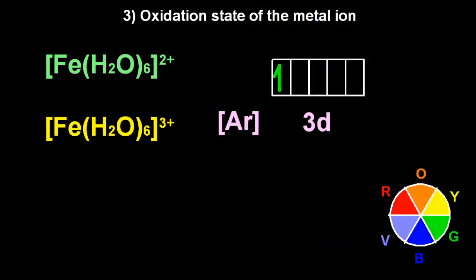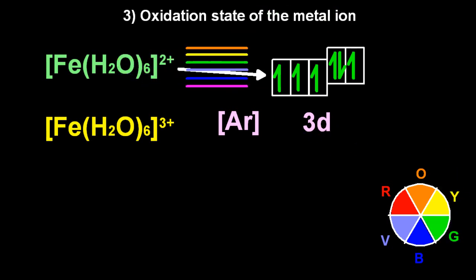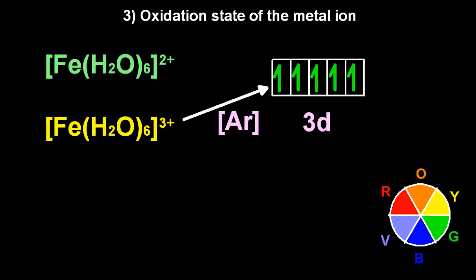And the third reason is the oxidation state of the metal ion. Now don't say the charge on the metal ion. The IB get their knickers in a twist over that and they won't give you the point. The charge on the metal ion in the first one is two plus. But the oxidation state is plus two. Subtle difference. Plus two for the oxidation state. So the lower the oxidation state, the smaller the split, because the less the interaction with the ligands. So the iron plus two oxidation state has a small split. Red light's absorbed. Electron is promoted. And the complex is green.